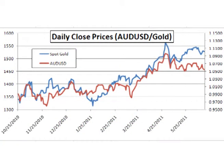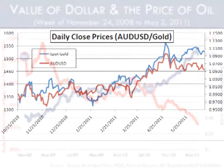If the two assets are positively correlated, it means that when one asset increases in value, the other asset tends to increase in value. And when one asset decreases in value, the other asset tends to decrease in value.